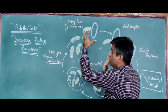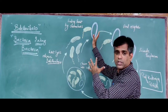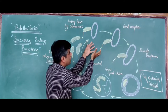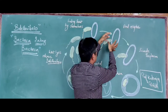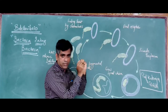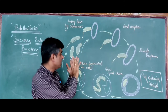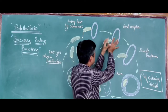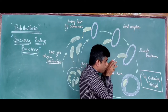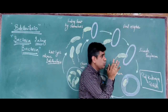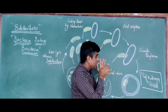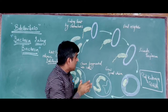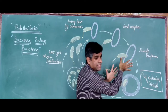Once Bdellovibrio finds its host, with the help of receptors there is a receptor-ligand kind of interaction where it attaches to the host cell and tries to penetrate. It attaches to the capsule of the host cell and tries to penetrate inside, invading the periplasmic space.